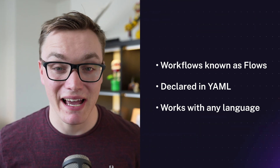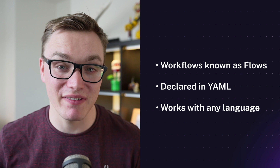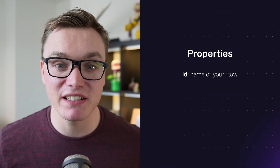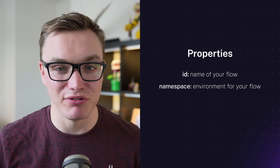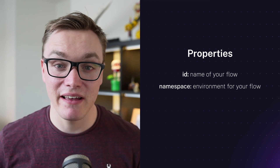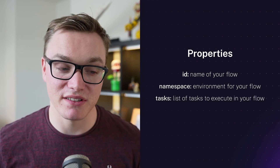Before we jump right in, it's worth going through some fundamental concepts that make Kestra so powerful. Inside the platform, workflows are known as flows, and they're declared in YAML, making them both super readable and compatible with any language. Within each flow there are three key properties you will need: first is id — think of this as the name for your flow. Following that is namespace, which is the environment you might want to test in, helping you separate production and development. And lastly there are tasks, which come in all shapes and sizes.